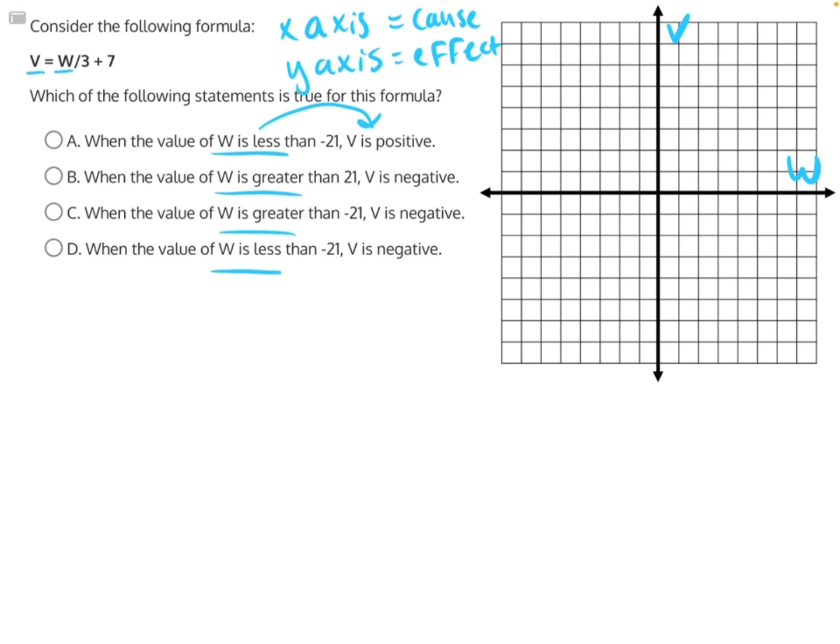Now let's find our intercepts to make graphing easy. To find our x-intercept, we'll need y to equal 0, or in this case, v to equal 0. So I'll rewrite my function, v equals w over 3 plus 7. But this time, I will plug in 0 for v. 0 equals w over 3 plus 7.